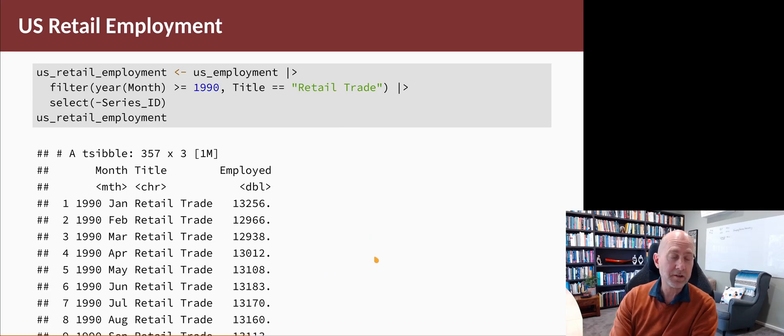357 rows of data on a single time series, which is total number of people employed in retail trade in the US every month since January 1990.